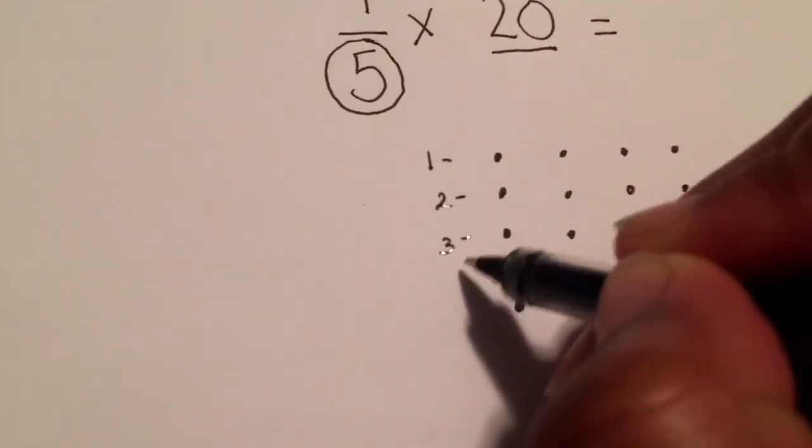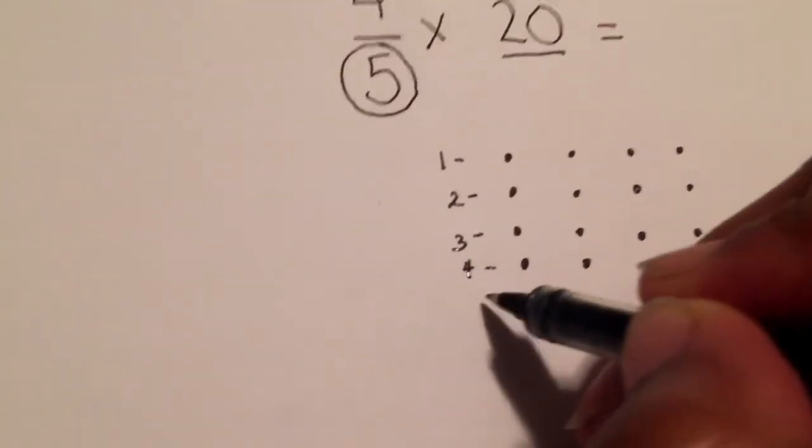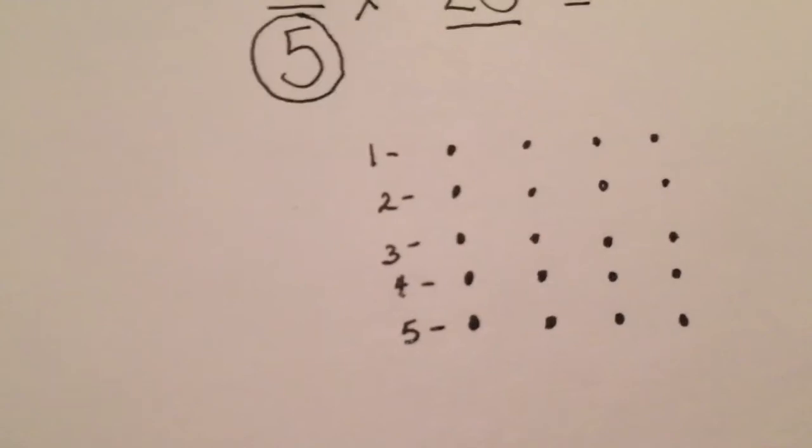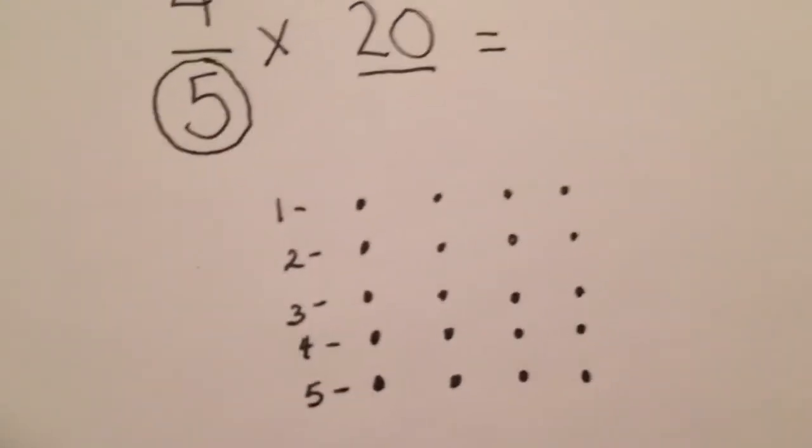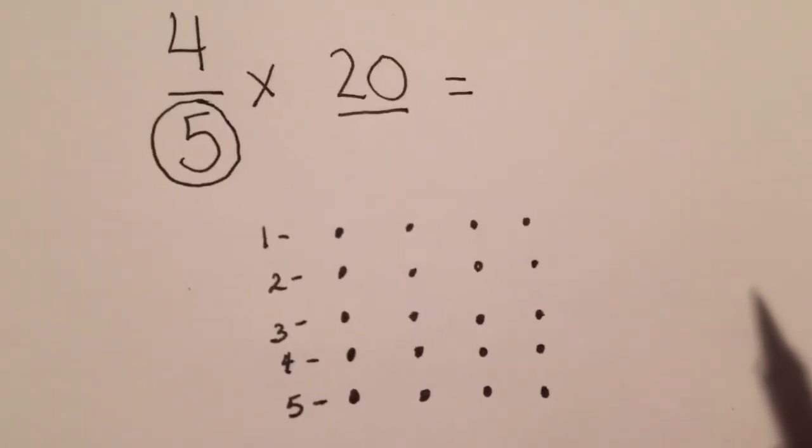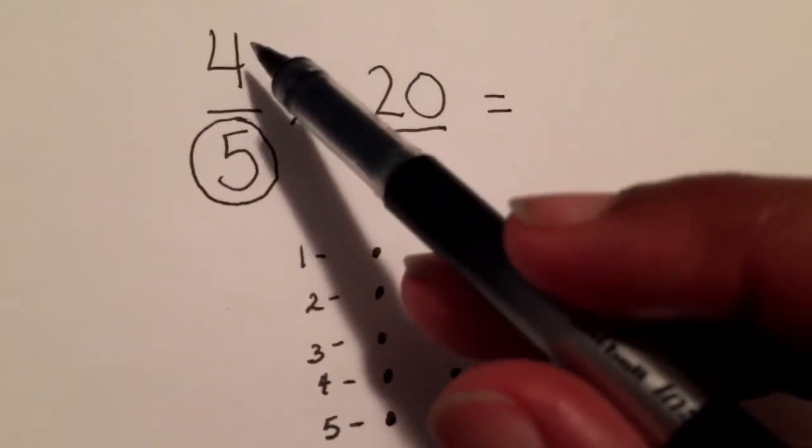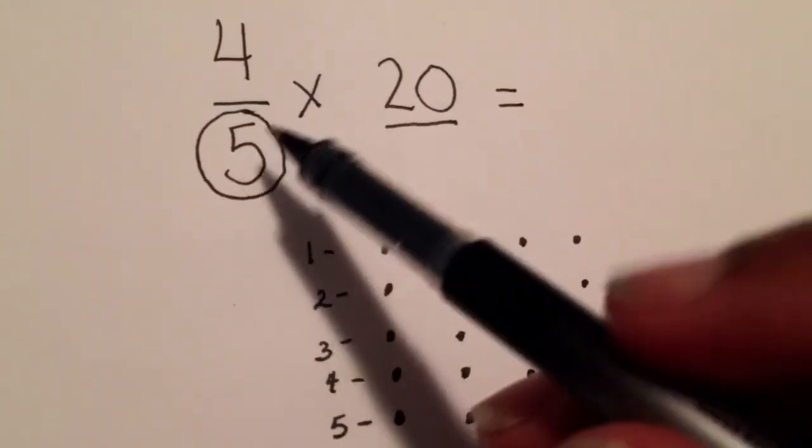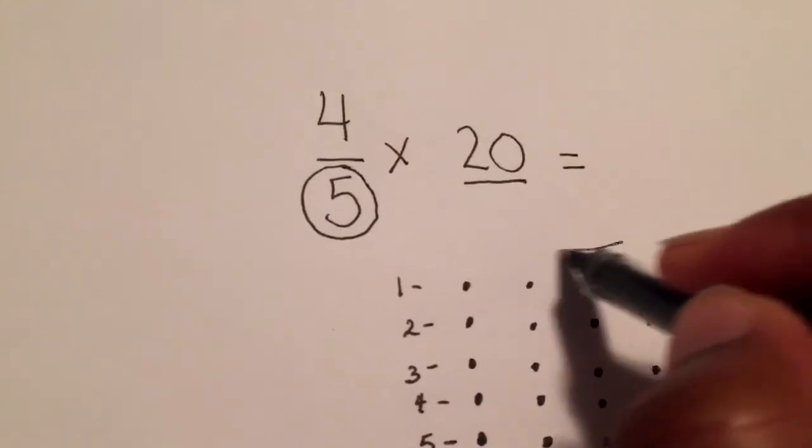What I'm going to do is I'm going to circle four out of those five groups and see what I have left.